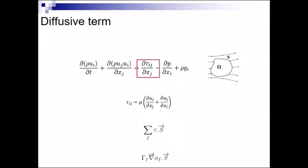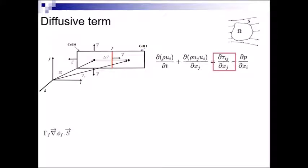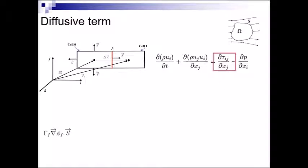We wish to approximate the diffusive flux at the face F, which is indicated in this expression. To perform this, we consider two control volumes as shown here. We are going to calculate the diffusive flux through the face F of cell 0 as shown in the figure on the left-hand side. Here S is the vector surface area of the face. Delta x, with x0 and x1 being the position vectors of cell 0 and cell 1 respectively, indicates the vector connecting the centroids of cells 0 and 1.